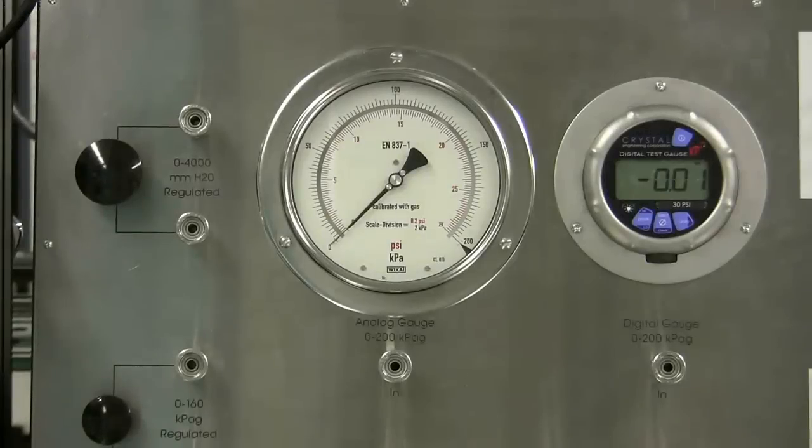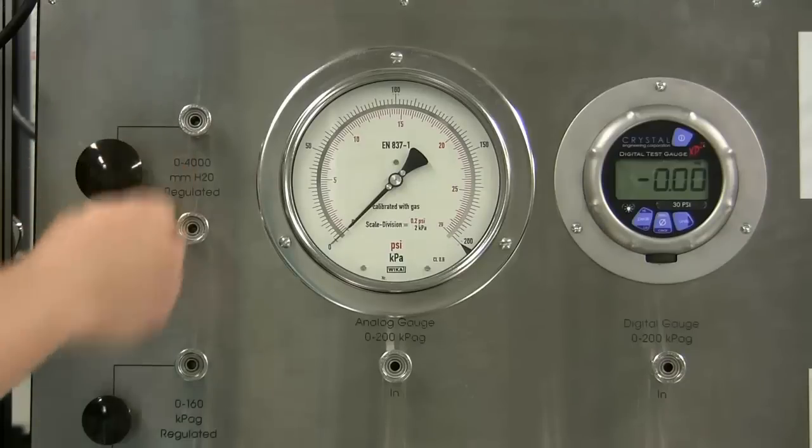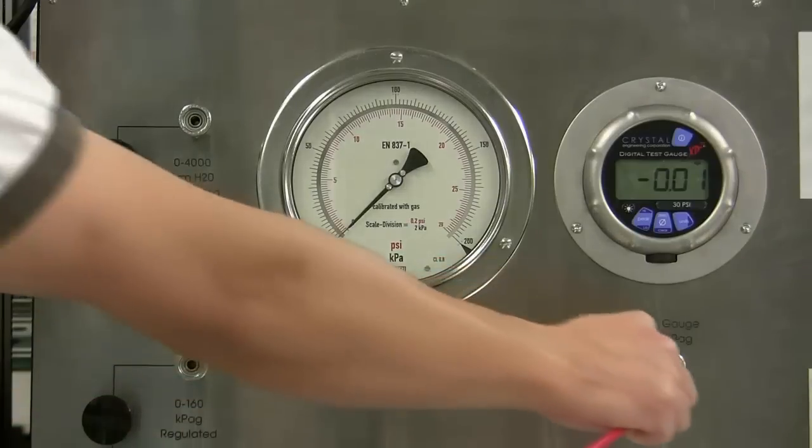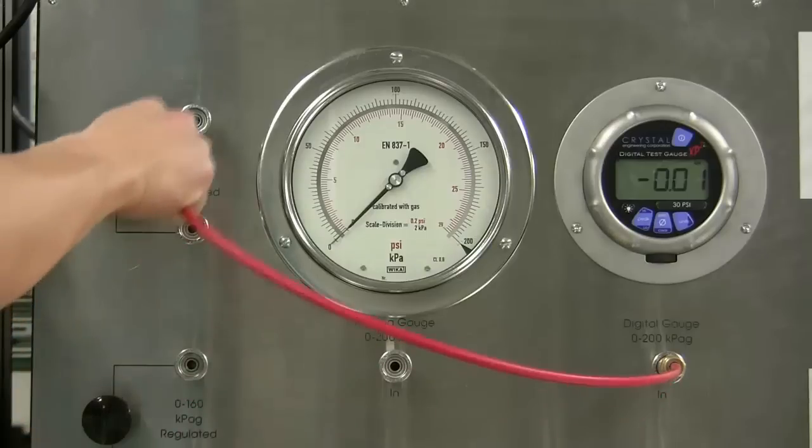Before connecting to the crystal gauge, remove pressure at the ports by backing out the regulator. Be careful not to spin the knob too far, as it may come off. As good safety practice, connect to the gauge first, then to the regulator.